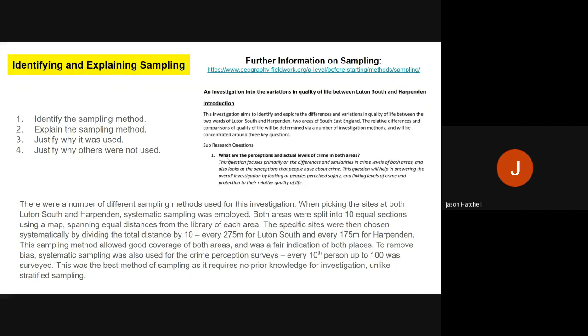This sampling method was good because it allowed good coverage and a fair indication, removed bias, and I could use it for the crime perception surveys as well—every 10th person up to 100, so 10 surveys in total. This was the best sampling method because it requires no prior knowledge, unlike stratified sampling which would require knowing the size of the groups. That paragraph clearly identifies the sampling method and explicitly explains why I chose it.